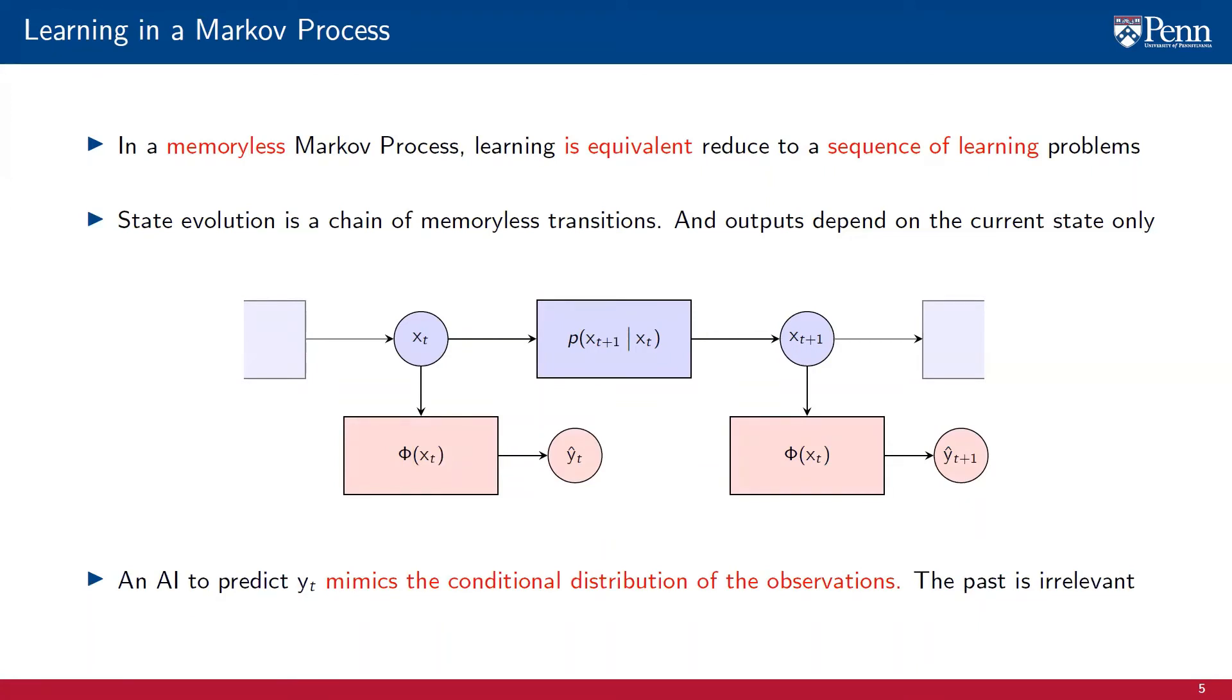This is all good, but we have already seen an example where predicting the future of the trajectory benefits from information about the past. The reason why this happens is because the process in the example is not Markov. When processes are not Markov, we have to resort to architectures that take the history of the sequence into consideration. One such architecture is the recurrent neural network that we introduce in the next video.